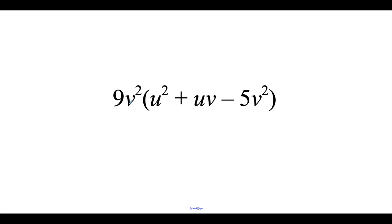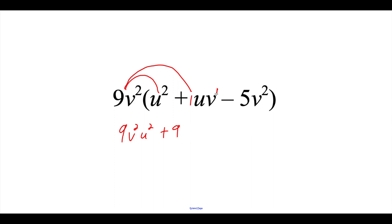Taking a look at this example, we've got 9v squared and we're going to multiply that by u squared plus uv minus 5v squared. If I try to take 9v squared and multiply it by u squared, those are two different variables, so I can't put them together — I'm going to leave it as 9v squared u squared. Then if I take the 9 times the plus uv, there's technically a 1 in front, so 9 times 1 is 9. Now in this term we do have a v in there, so we're going to add this v squared to this v to the first power. v squared times v to the first gives us v cubed, but we don't have any extra u variables to add, so that stays as a plain u, giving us 9uv cubed. Then if I take the 9v squared and multiply by the negative 5v squared, 9 times negative 5 is negative 45. These are both v variables, so we add those exponents together, giving us v to the fourth.